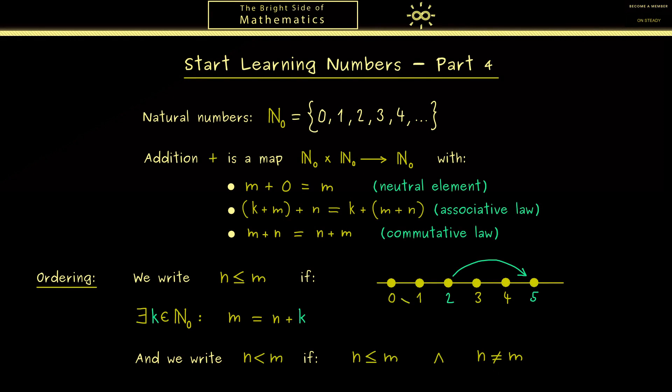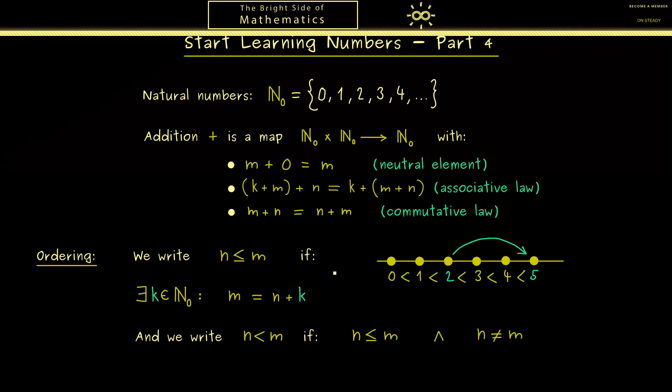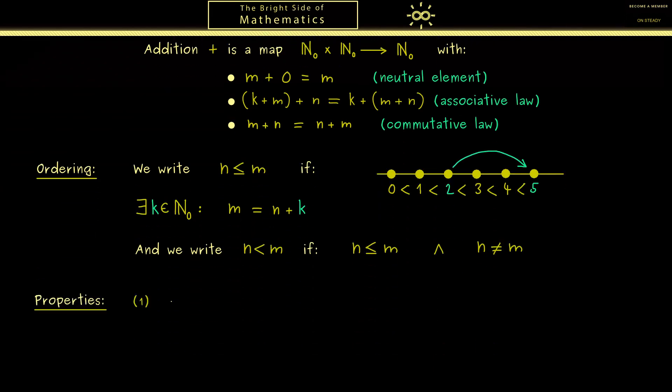Now you should know sorting a set in such a way is a general concept which has to fulfill 3 properties. Therefore let's write them down. The first property is that we can compare each element with itself. In our case, easy to check, we just have to choose k to be 0. And this property is simply called reflexive.